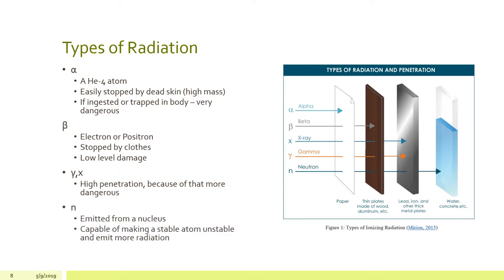Gammas and x-rays are attenuated by very dense elements like lead or iron or depleted uranium. And finally, neutrons are emitted from the nucleus and are capable of making other stable atoms unstable and emit more radiation themselves as they continue on through their decay chains.